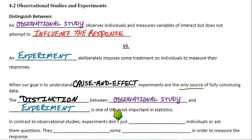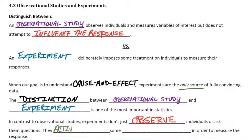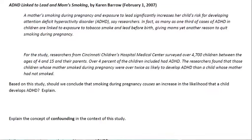Can you clearly distinguish between what an observational study is and what an experiment is? In contrast to observational studies, experiments don't just observe individuals or ask them questions like a survey — a survey would be an example of an observational study. Experiments actively impose some treatment and try to measure its effects.